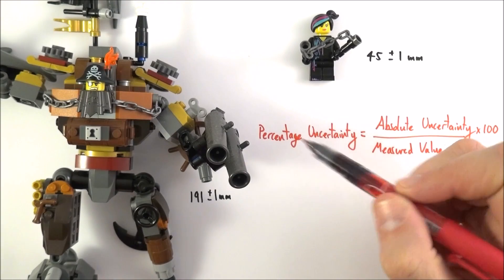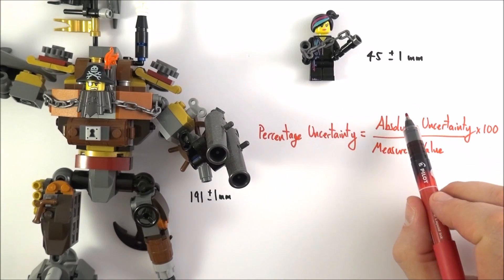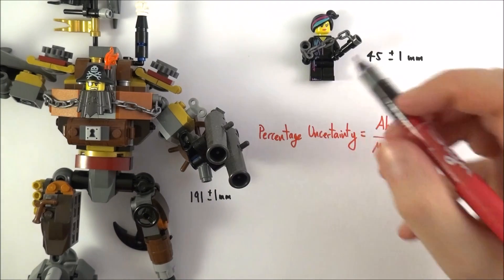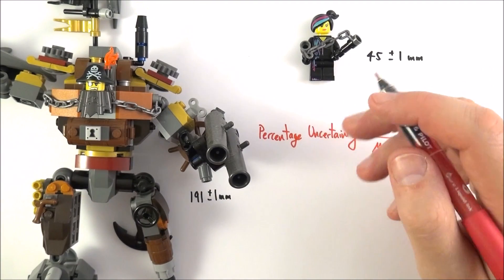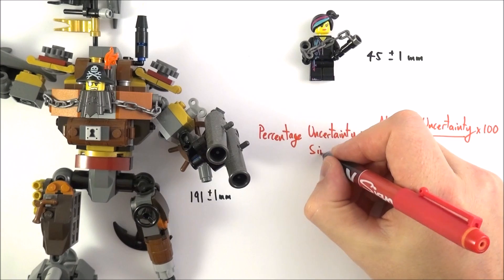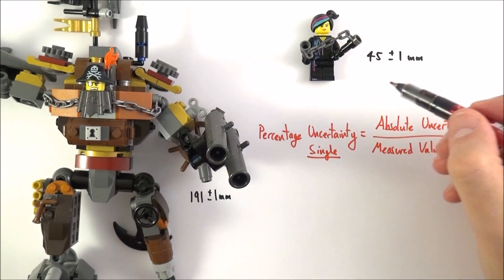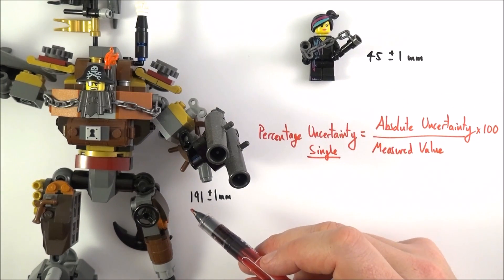Now the percentage uncertainty in this case is the absolute uncertainty over the measured value multiplied by 100. And this gives us a percentage uncertainty for a single value. Now that's really important. This is where we just have a single measurement of some kind of quantity.